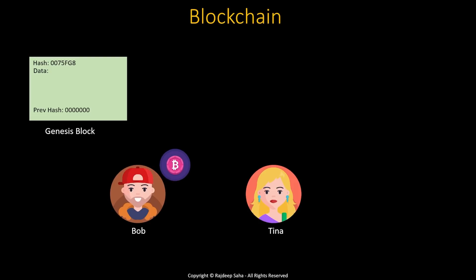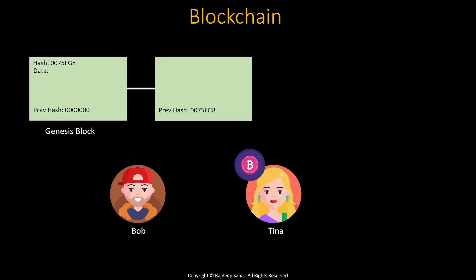Let's move forward with a real-world use case. Let's say Bob sends Tina one Bitcoin. Another block will be added, and the previous hash for this block will point to the block prior to that. The data field will reflect that Bob sent Tina one Bitcoin, and finally this block will have its own unique hash number. This hash is derived based on the data and a couple of other factors.